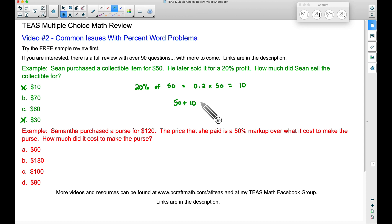It's going to be the $50 plus that 20% of 50. That's the $10 profit he's getting. And therefore 50 plus 10, he sold the item for $60. Our answer is C.